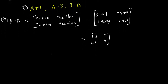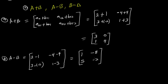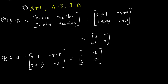The same way, we perform A minus B element-wise. So A minus B: we have 2 minus 1, negative 4 minus 4, 3 minus negative 2, and 1 minus 3. Finding the solutions: 2 minus 1 gives 1, negative 4 minus 4 gives negative 8, 3 minus negative 2 is 3 plus 2 which gives 5, and 1 minus 3 gives negative 2. So the result of A minus B is the matrix [1, negative 8, 5, negative 2].